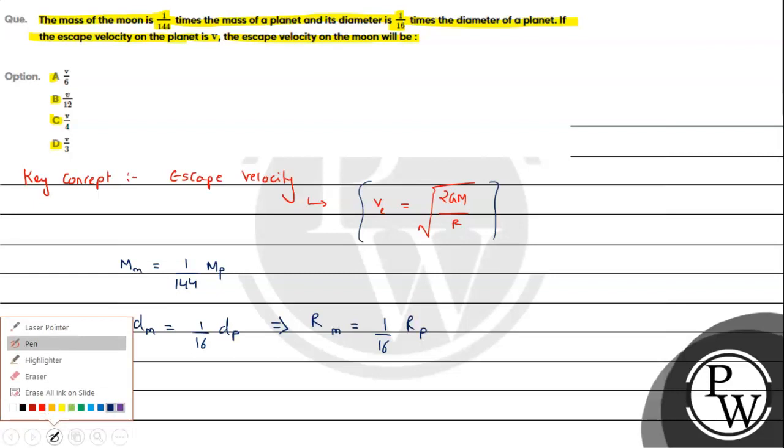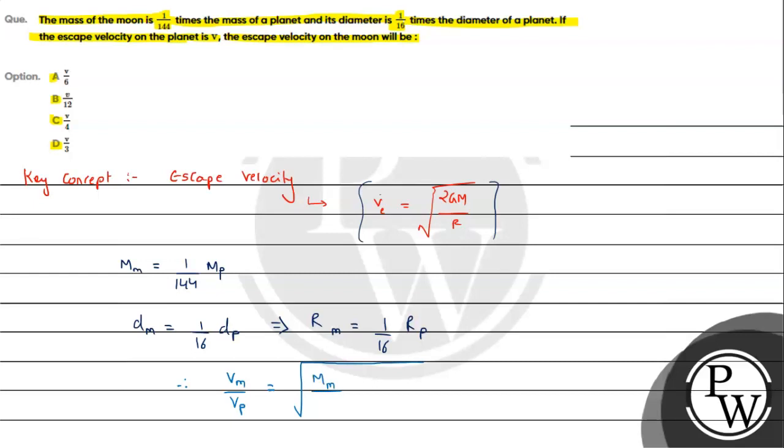We can use the proportionality and solve it further. Therefore, we need to find escape velocity of moon. Vm upon Vp will be equals to under root of mass of moon upon mass of planet into radius of planet upon radius of moon. Velocity is directly proportional to mass and inversely proportional to radius.